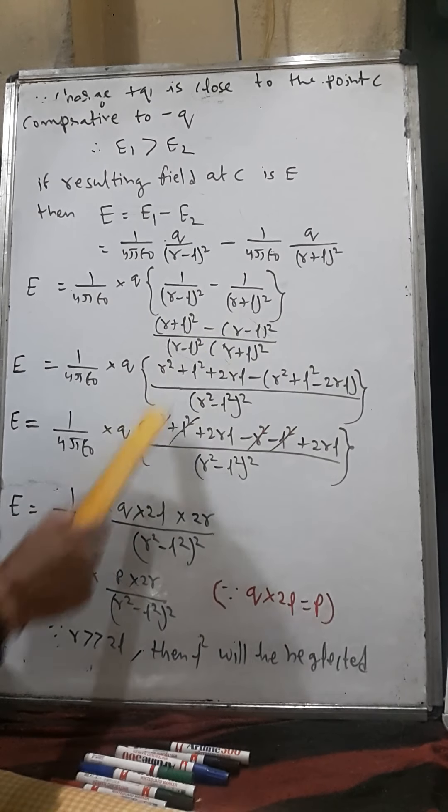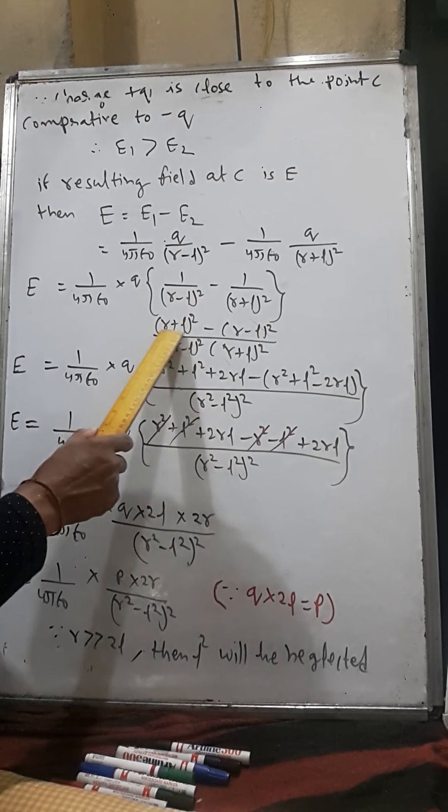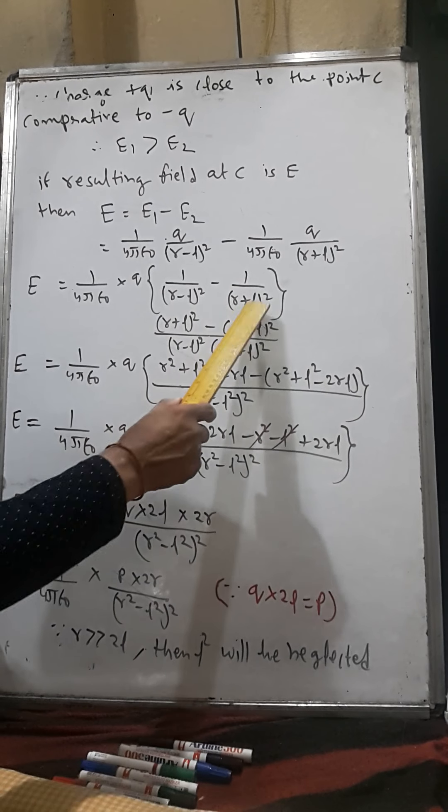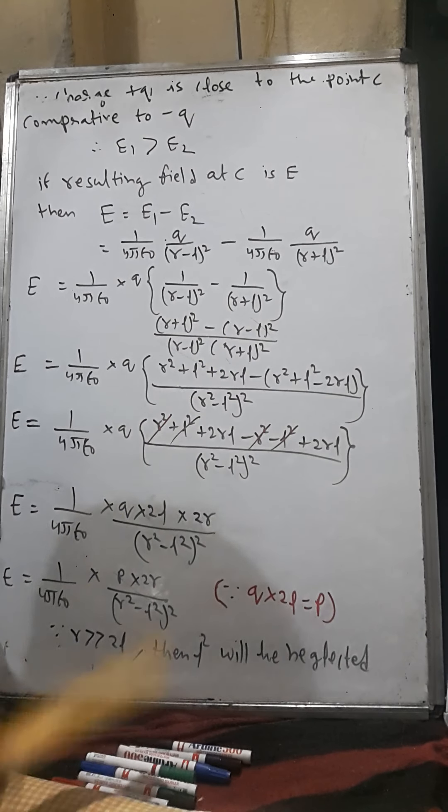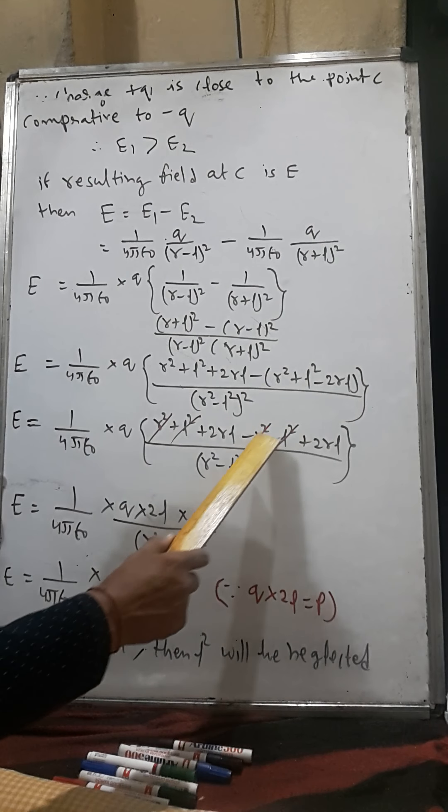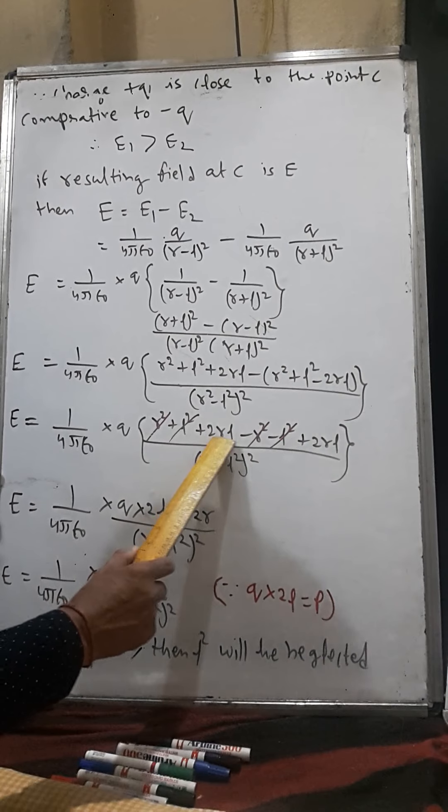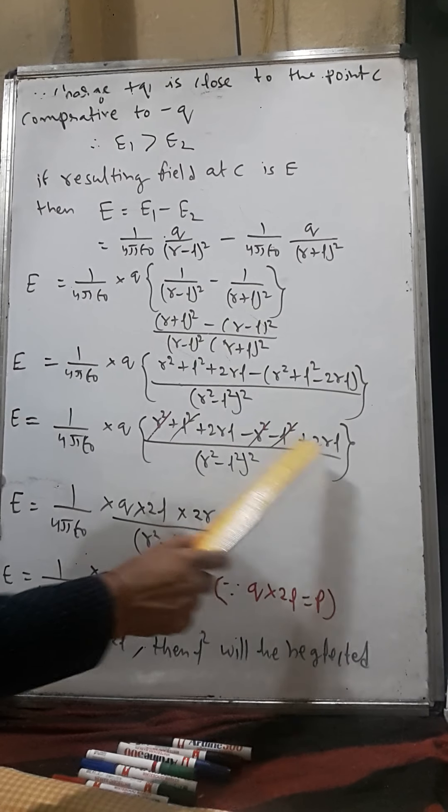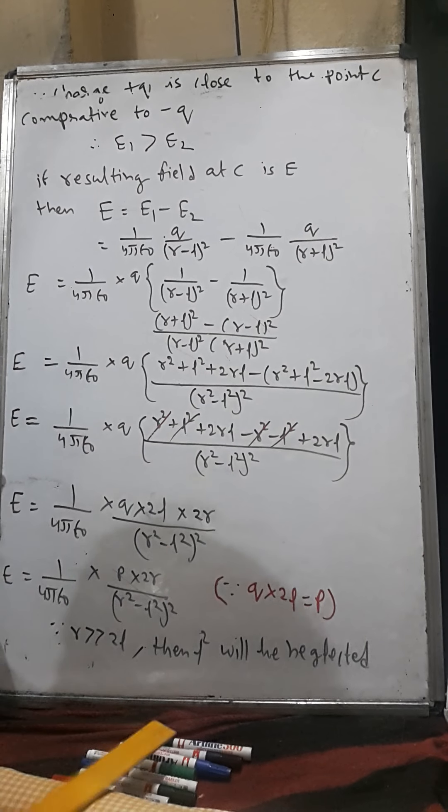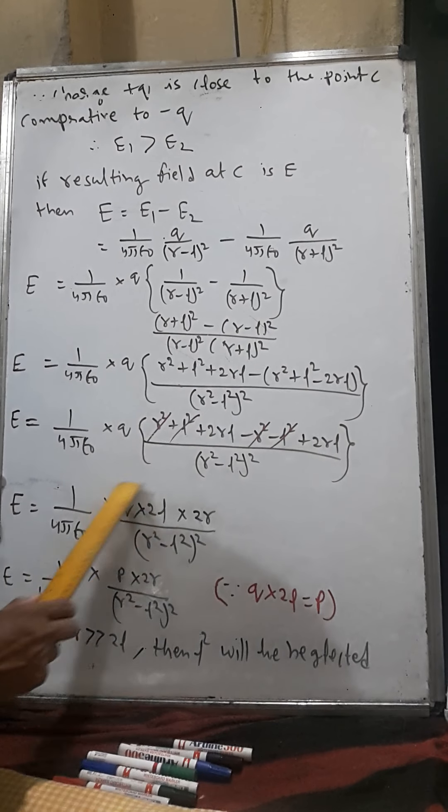Now take the LCM. The LCM is (r plus L) whole square times (r minus L) whole square. Solving this, opening the minus sign, these cancel out, what remains is 4rL. I wrote 4rL as 2L into 2r. And q into 2L is what? The dipole moment.